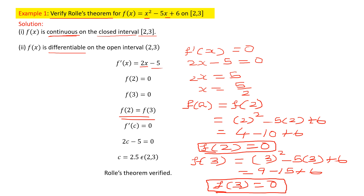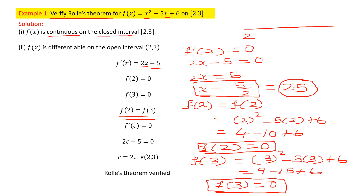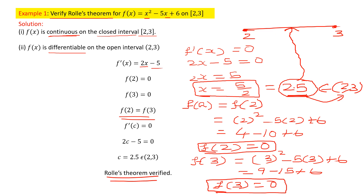Now we need to verify the critical point. We already found x = 5/2, which is 2.5. We check whether this point lies in the interval [2, 3]. The point 2.5 lies within the interval [2, 3]. Since the critical point lies in the interval, Rolle's theorem is verified. If the point had lain outside the interval, Rolle's theorem would not be verified.